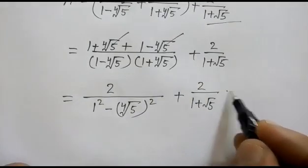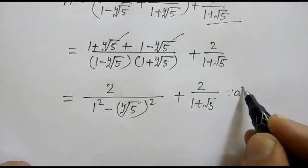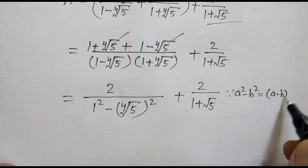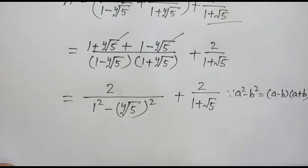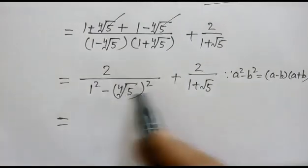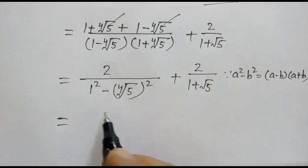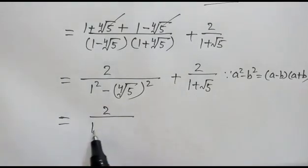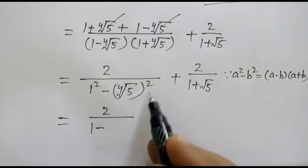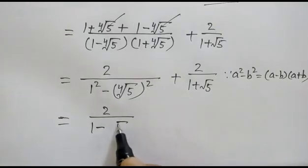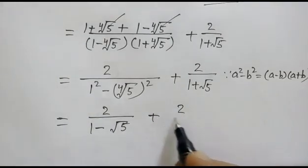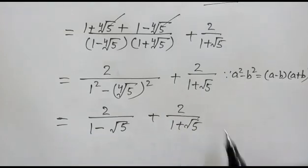This simplification uses the identity A squared minus B squared equals (A minus B)(A plus B). So the denominator becomes 1 minus square root of 5, giving us 2 over 1 minus square root of 5, plus 2 over 1 plus square root of 5.